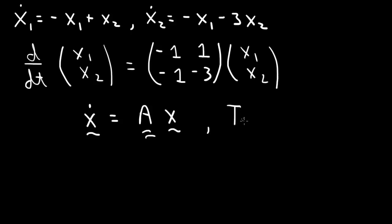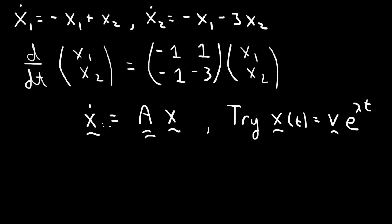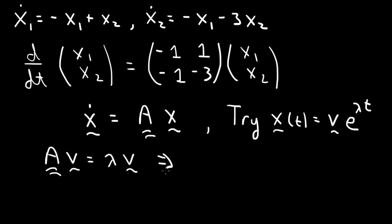To solve this, we try a particular ansatz or trial solution: x(t) equals some constant vector times the exponential e to the lambda t. When we substitute into the differential equation, the derivative brings down a lambda, we can cancel the e to the lambda t, and we end up with Av equals lambda v. This is the eigenvalue problem, which we write as (A minus lambda I) times v equals 0.